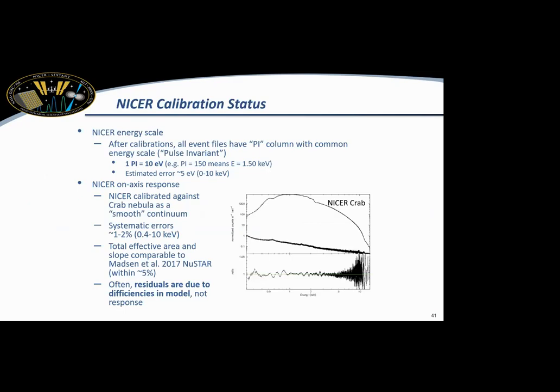Okay, so just some updates on the reminder on the calibration status. So typically, the systematic errors should be between one and 2%. Sometimes you'll see these wiggles at the bottom, which we'll talk about in a second. And overall, our agreement with NuSTAR is pretty good. And as a reminder, the residuals are often deficiencies in the models and not necessarily the response.